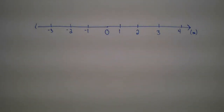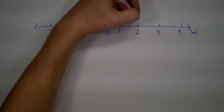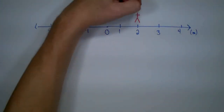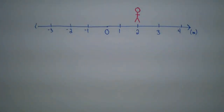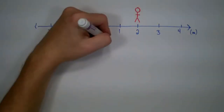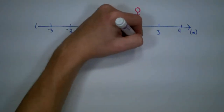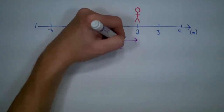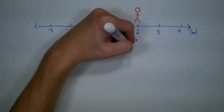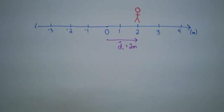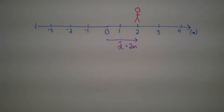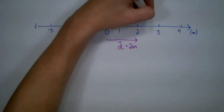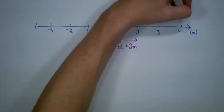Let's say that we want to look at the position of a person. Our person right now is standing at two meters on the number line. We'll define our position vector — it will extend from zero to two meters. We'll call this d1, and it will have a length of two meters and a direction to the right.